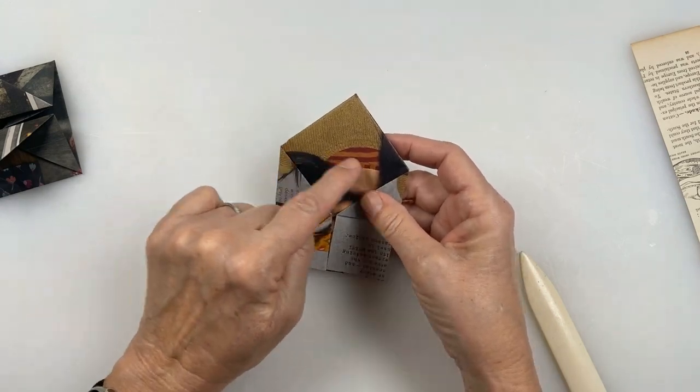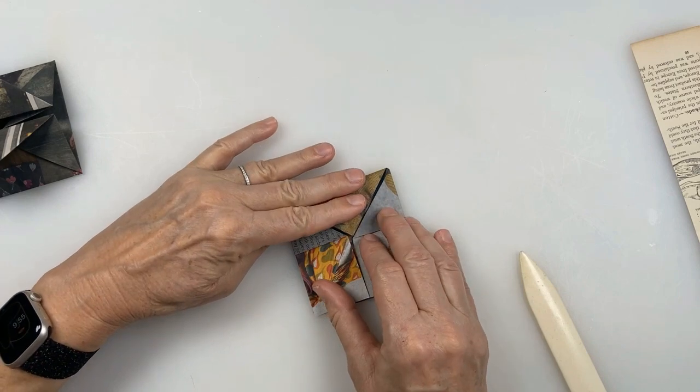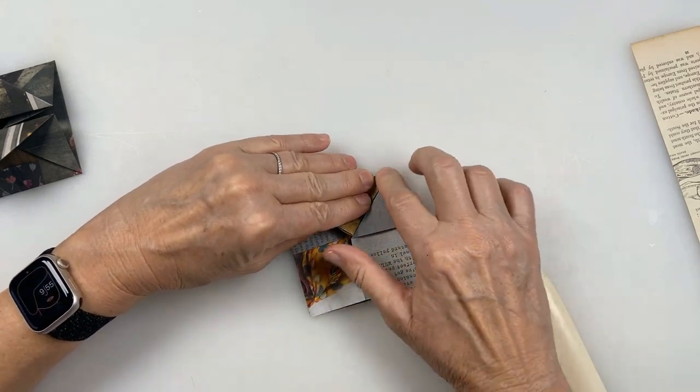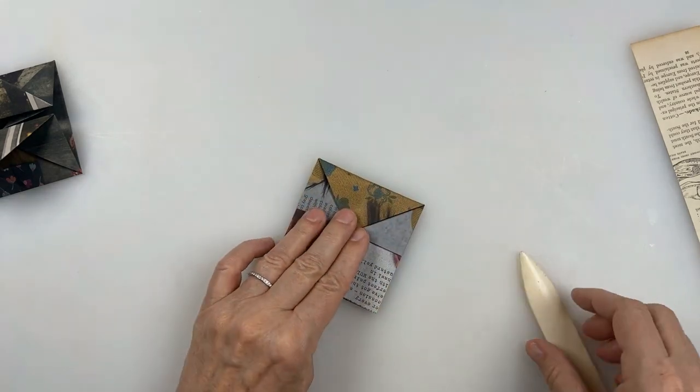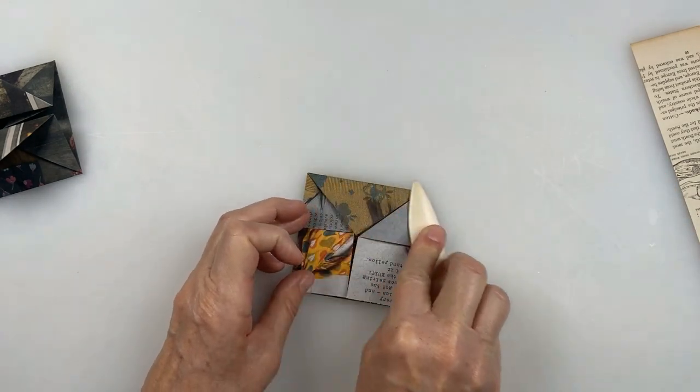And now what I'm going to do is take the top edge, this big thick top edge, and I'm going to fold it down to meet. Just going to give it a crease, kind of make sure that edge is sharp there and the edge is sharp here. And I'm just going to give that a nice crease. It's really thick at this point, right at the top.